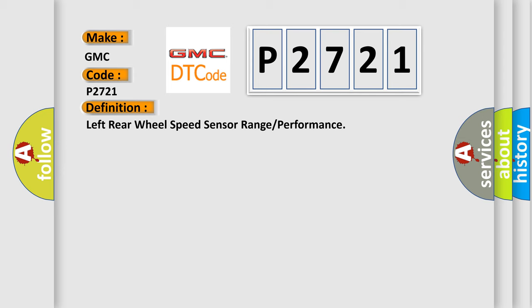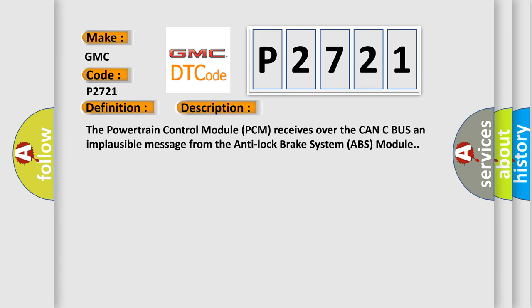And now this is a short description of this DTC code. The powertrain control module PCM receives over the CAN-C bus an implausible message from the anti-lock brake system ABS module.